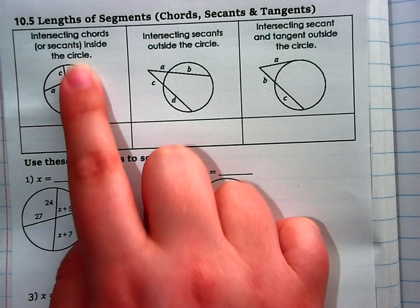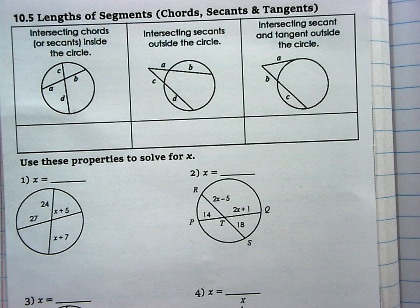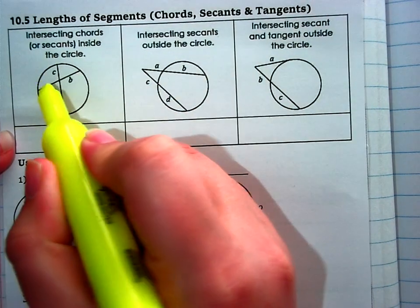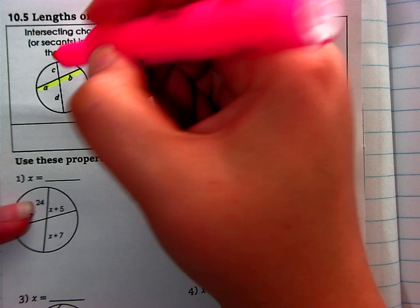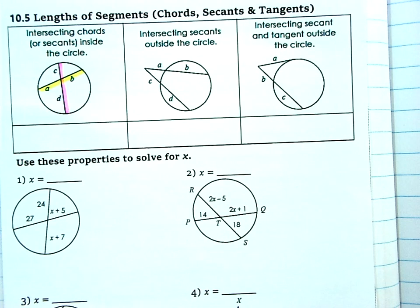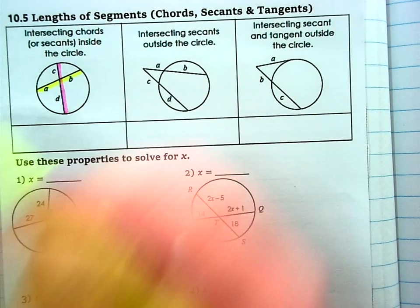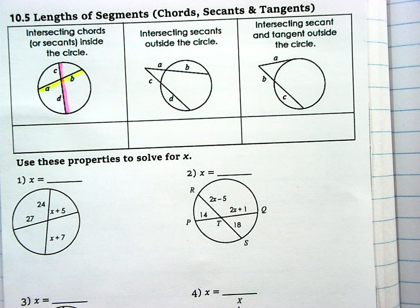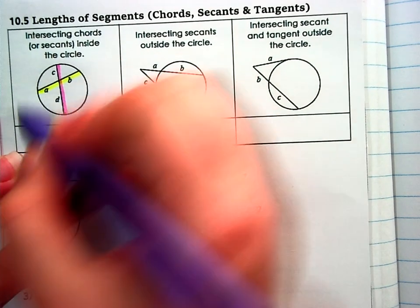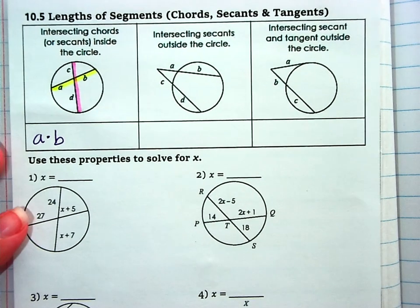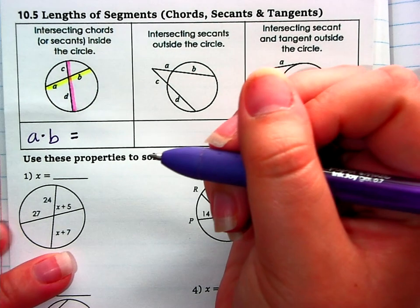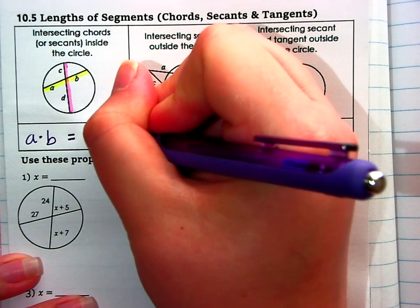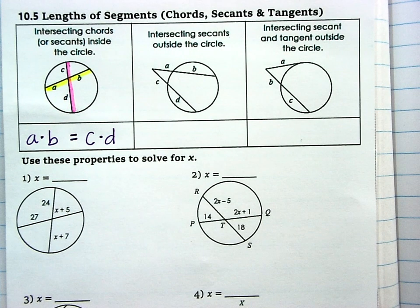First scenario we're looking at is when you have intersecting chords or secants inside the circle. So we have one chord AB and we make that yellow and the other chord CD. So when you have segment lengths, you have to follow this setup. We're going to do the pieces of the same chord A and B multiplied, A times B, and that equals the segments of the other chord multiplied, C times D.